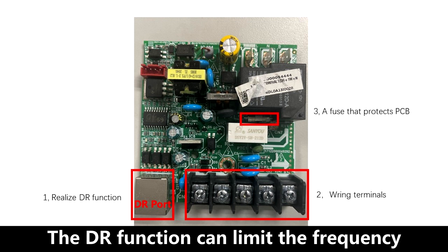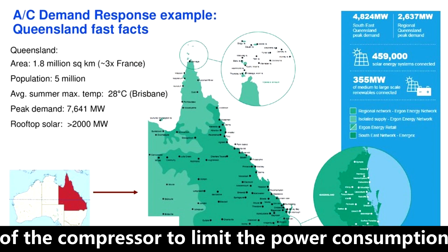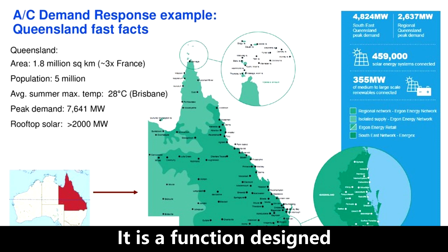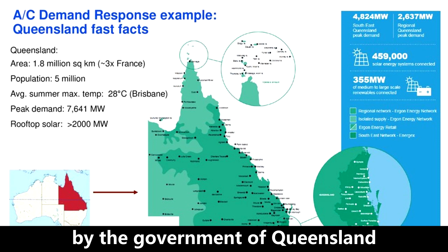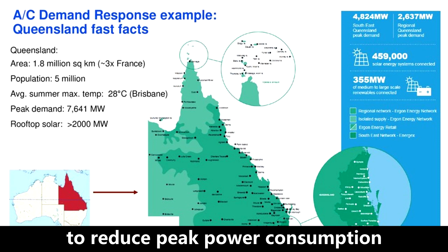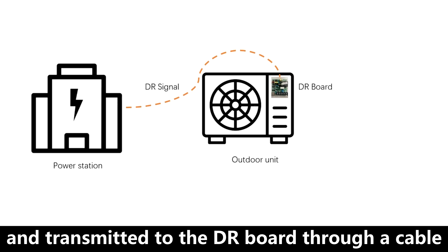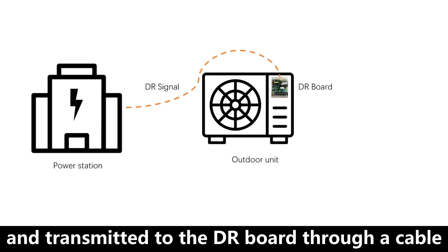The DR function can limit the frequency of the compressor to limit power consumption. It is a function designed by the government of Queensland to reduce peak power consumption. The DR signal is sent from the power station and transmitted to the DR board through a cable.